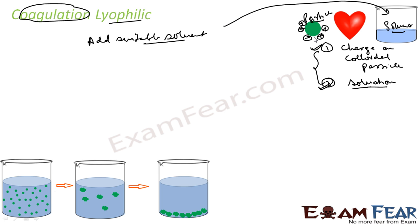When you add a suitable solvent, what happens is: the particles love solvent X. But if we add solvent Y, the particles may not love solvent Y — they may hate it and become unstable. For example, you love your school because of a particular teacher. If that teacher leaves and another comes, you may not love your school anymore. Similarly, these particles loved solvent X; adding solvent Y makes them hate the whole system.